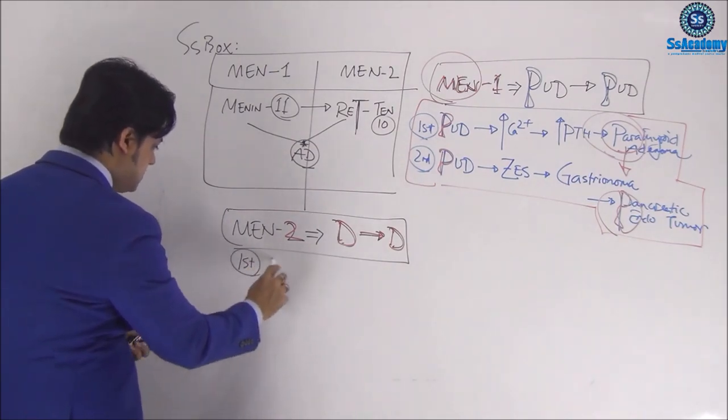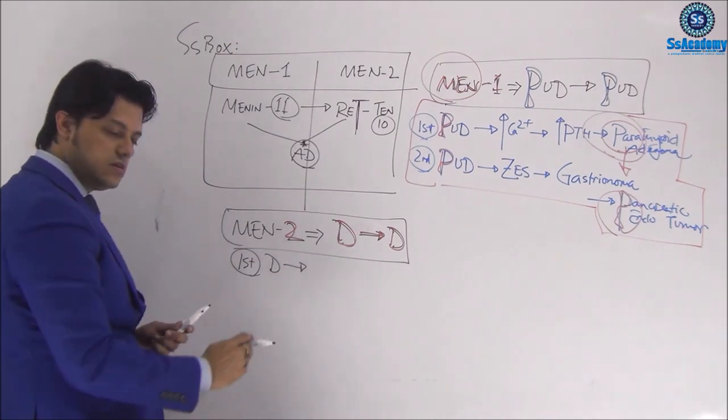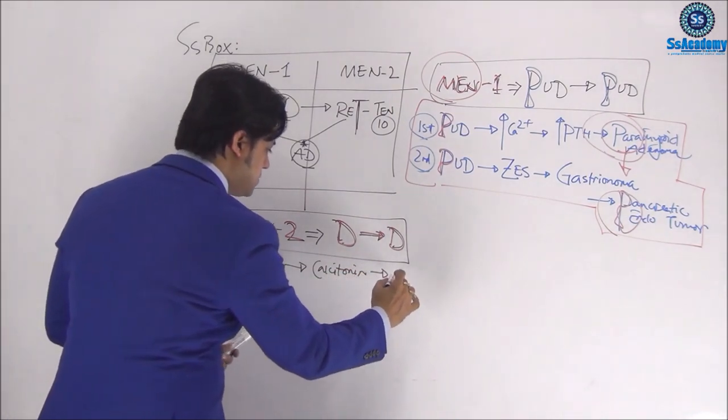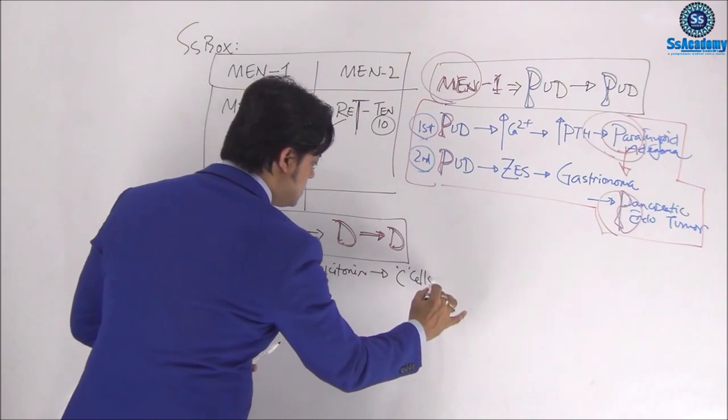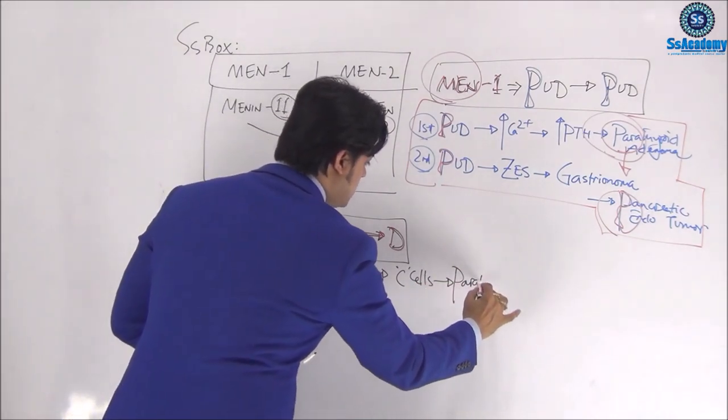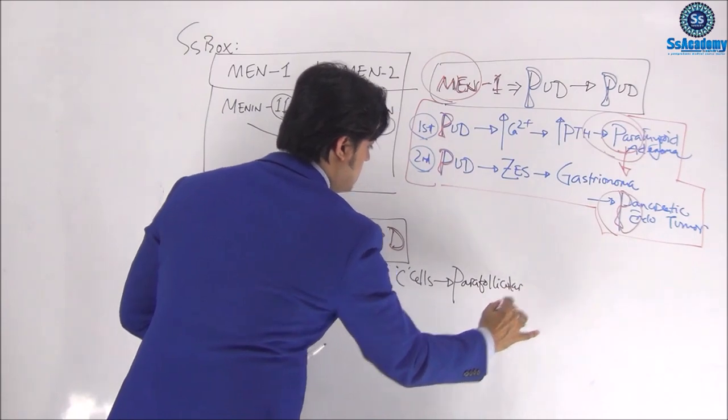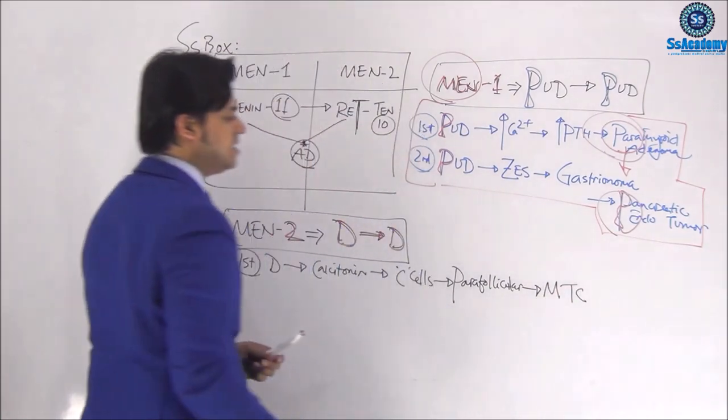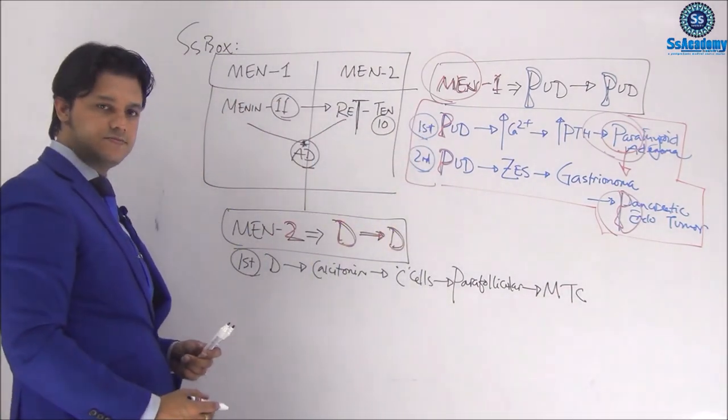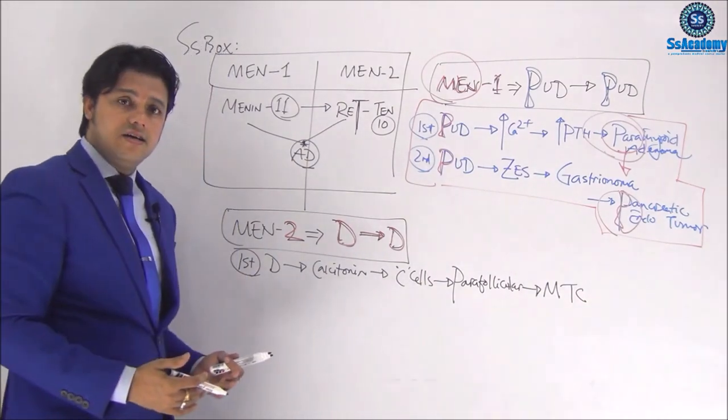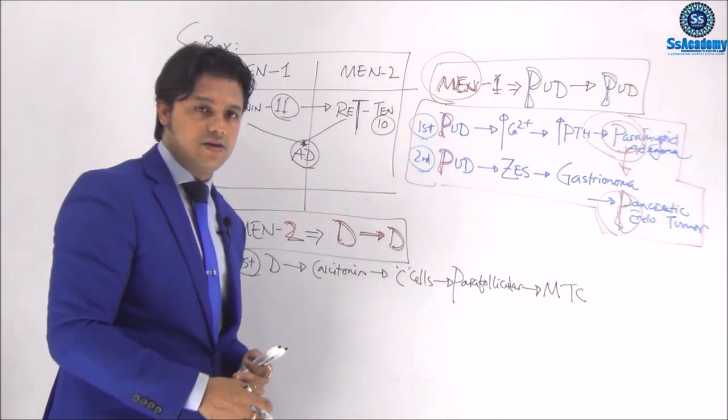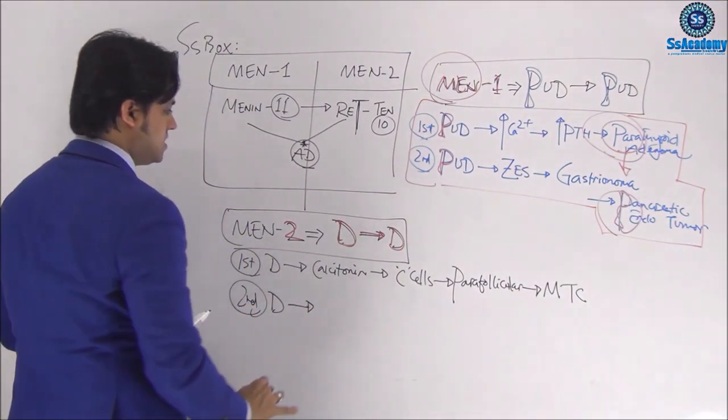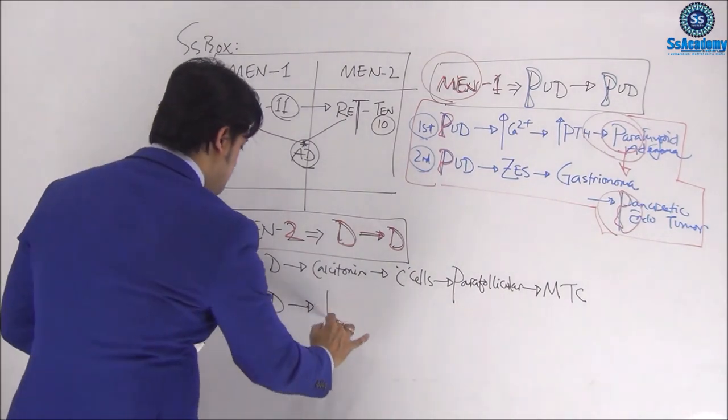You see, MEN type 2 is diarrhea followed by diarrhea. So let's talk about it. There's a first diarrhea, diarrhea is due to calcitonin. And this calcitonin is come up with the C cells. And these C cells is nothing but parafollicular cells. And these parafollicular cells tumor is nothing but MTC, medullary thyroid carcinoma.